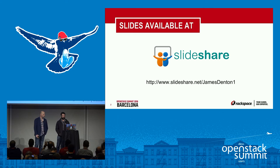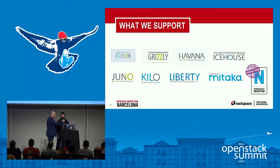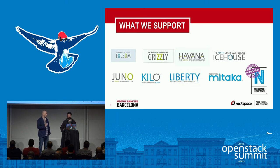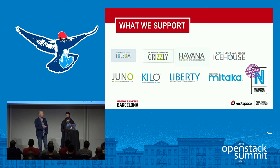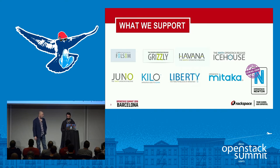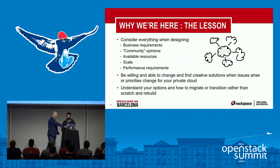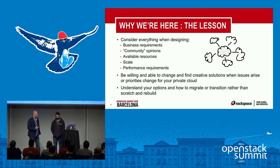At Rackspace we are a hosting provider, one of the earliest contributors and creators of the OpenStack project. As architects and engineers on the Rackspace private cloud team, we support a wide range of OpenStack clouds from Folsom to Newton, so we've seen a lot. I've been on the team since 2013, working since 2012; Johnny joined in 2014. What we're here to talk about is the lessons we've learned and observations we'd like to share from implementing various configurations throughout the years.